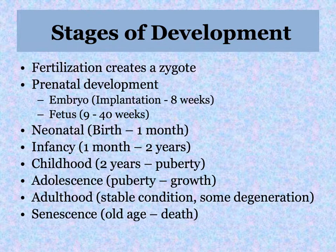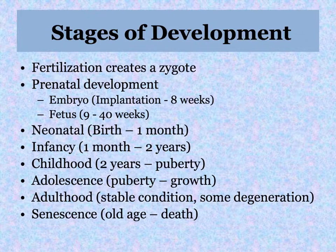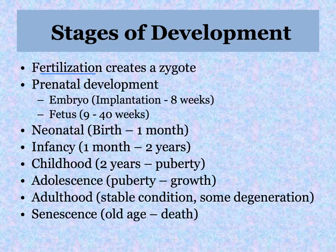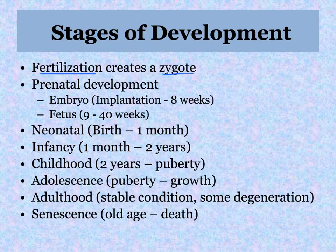I want to start with a quick overview of all the stages of human development. Human life starts with fertilization, when an egg and a sperm cell come together and their two nuclei fuse — then you have a zygote. That first fertilized egg cell, that single cell that gets us all started, is a zygote.